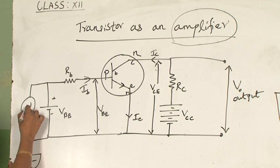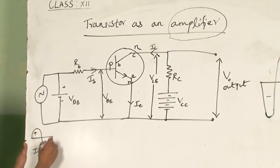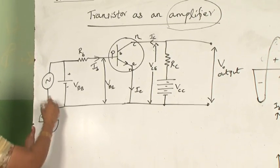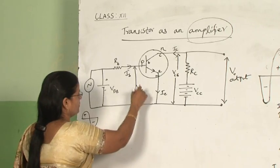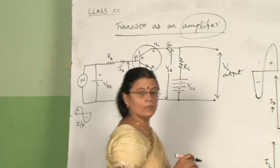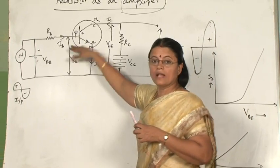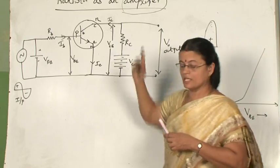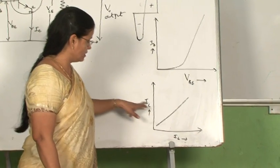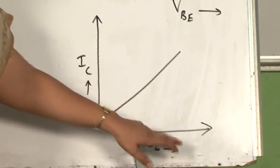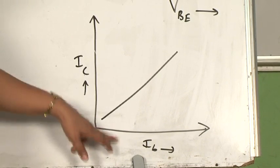The input signal to be amplified is superimposed on VBB. When this input signal changes instantaneously, the effective input voltage VBE will also be changing. When VBE changes, the input current IB also changes. When current in the input section changes, the current in the output section IC also changes. This graph represents how the change in IB controls the change in IC — when base current changes, it produces a proportionate change in output current IC, and the graph will be a straight line.